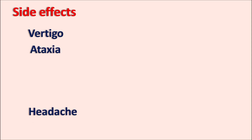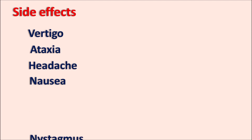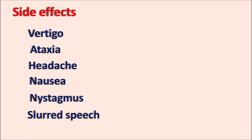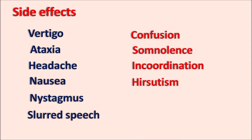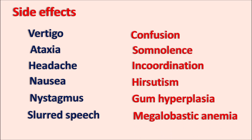The important side effects of phenytoin are vertigo, ataxia, headache, nausea, nystagmus, crossed eyes, slurred speech, confusion, and somnolence — it produces sleepiness though not full sedation. Muscle incoordination can also be observed. Hirsutism (unwanted hair growth) is observed with phenytoin use. Gum hyperplasia is another important side effect — proliferation of the gums can be observed. It can also produce megaloblastic anemia, and folic acid supplements are sometimes required to counteract this.